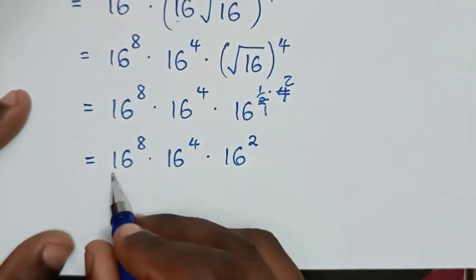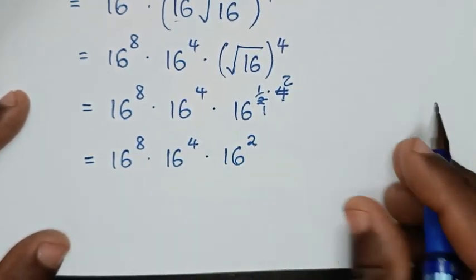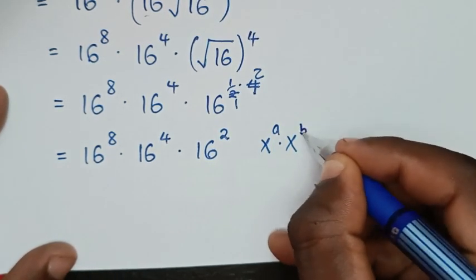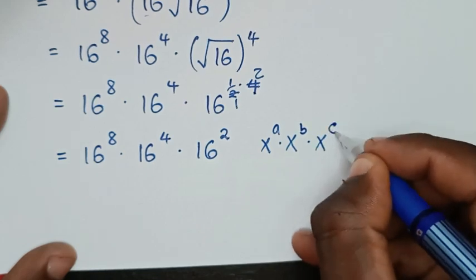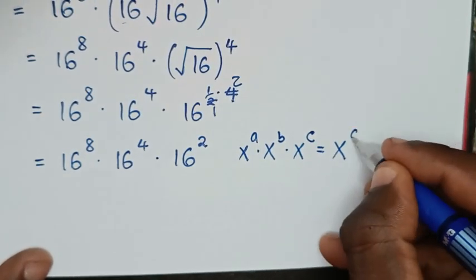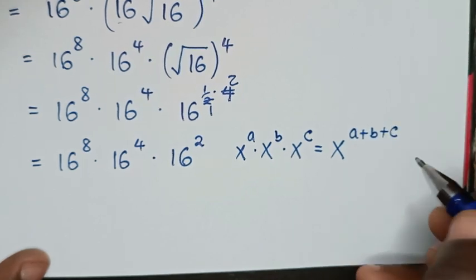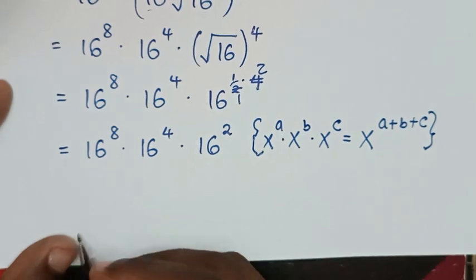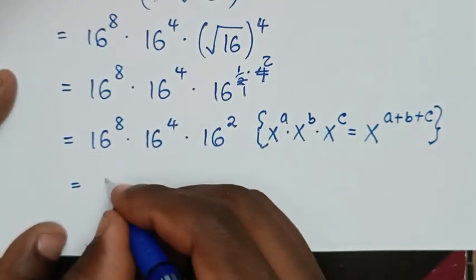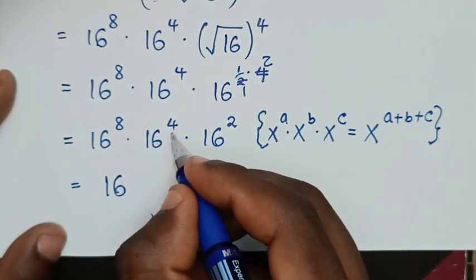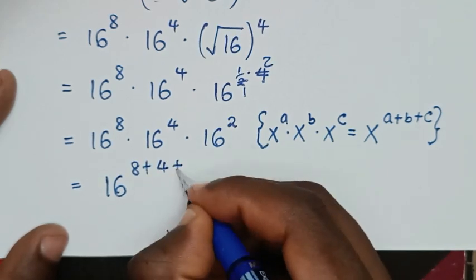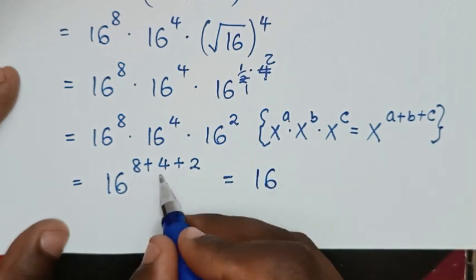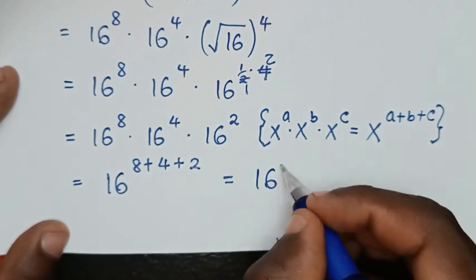From here, we'll have the same base but different powers. So therefore, we'll apply the rule: x power of a, times x power of b, times x power of c, is equal to x power of a plus b plus c. So it will be equal to 16, power of 8 plus 4 plus 2, which will be equal to 16: 8 plus 4 is 12, 12 plus 2 is 14.